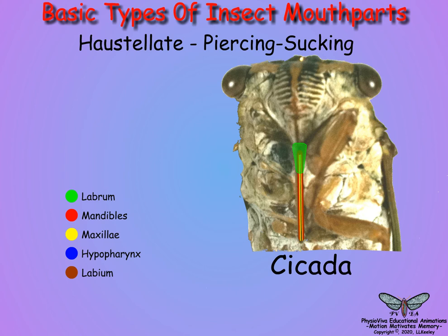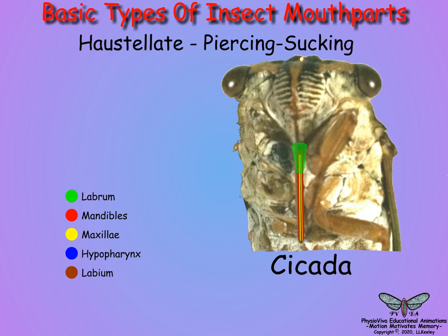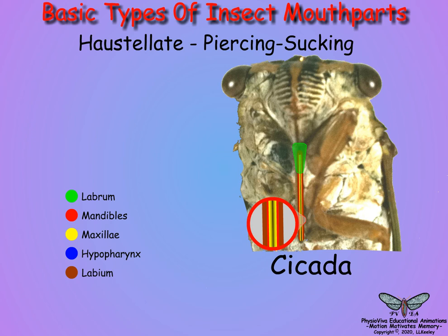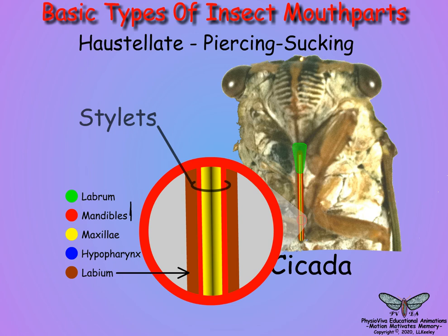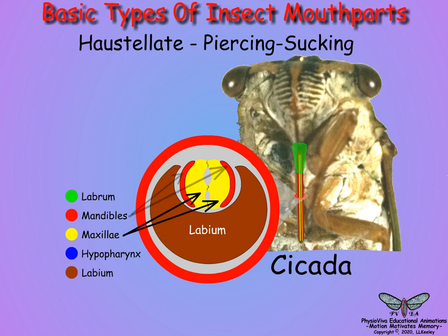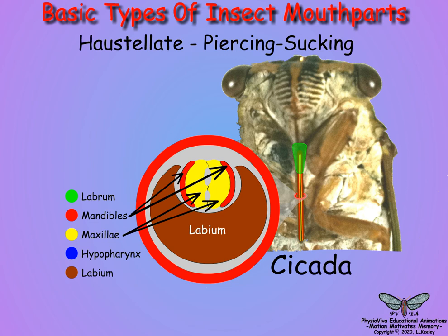Color codes are used to identify the various modified mouthparts derived from the chewing mouth. In homopteran and hemipteran species, such as the cicada shown here, the labrum forms a small flap over an elongate beak or proboscis. The beak is an external segmented sheath formed by the labium that encloses four piercing-sucking stylets comprised of the two mandibles and two maxillae.